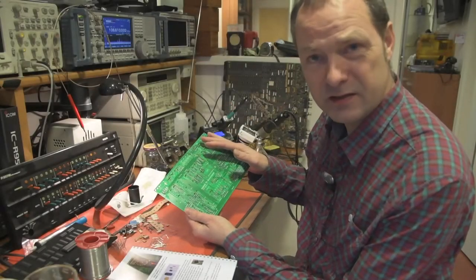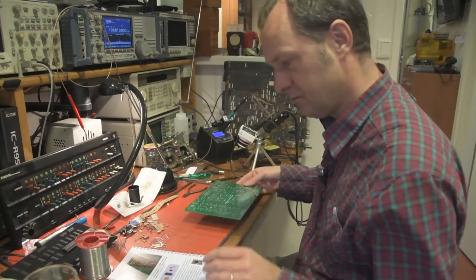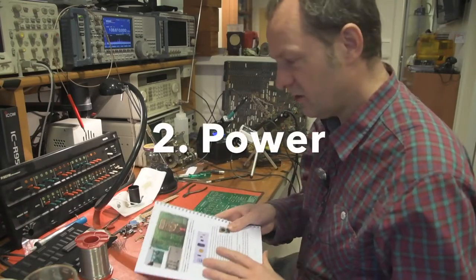Great, we have a board with 40 capacitors. Next is to get the power circuit on the board. So this is step two in the assembly manual.